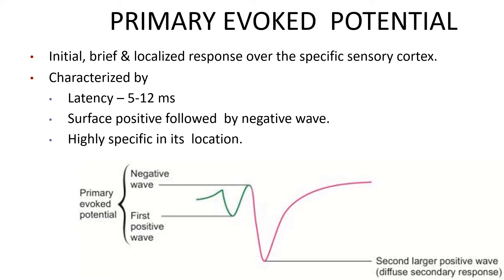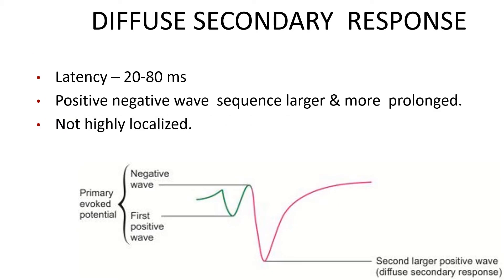The primary evoked potential is the initial, brief, and localized response for the specific sensory cortex. It is characterized by a latency of about 5 to 12 milliseconds. First there appears a surface positive wave, followed by a negative wave. Primary evoked potential is highly specific and can be observed only where the pathway from a particular sensory organ ends.